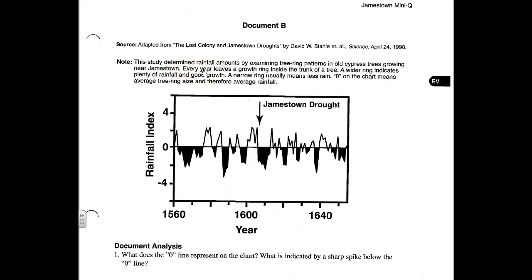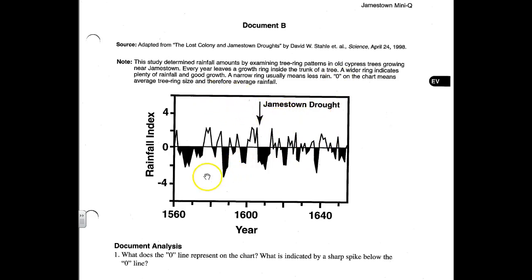Every year leaves a growth ring inside the trunk of a tree. A wider ring means plenty of rainfall and good growth. A narrow ring usually means less rain. A zero on the chart below means average tree ring size and therefore average rainfall.